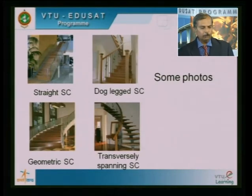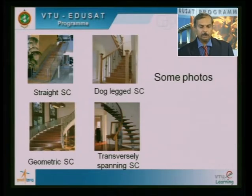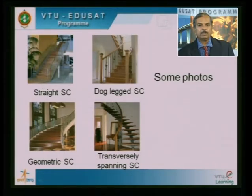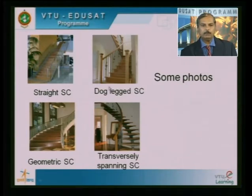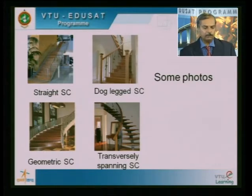These are some photos — you can make out that all these staircases are wooden staircases, but what is important is to appreciate the type. This is the stride staircase — it runs as one flight. Here it is one flight and then a 90-degree turn, and the second flight starts — that is a 180-degree turn in a dog-legged staircase. We also have a geometric staircase where the geometry of the flight changes. All three of these staircases are referred to as longitudinally spanning staircases.